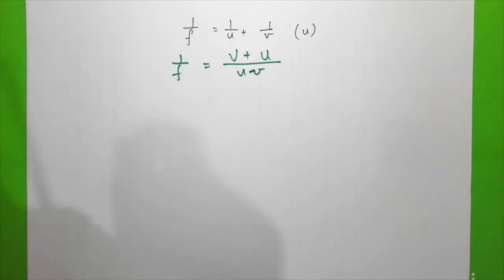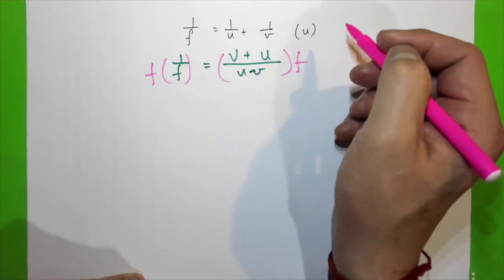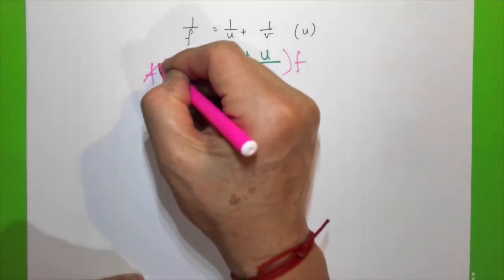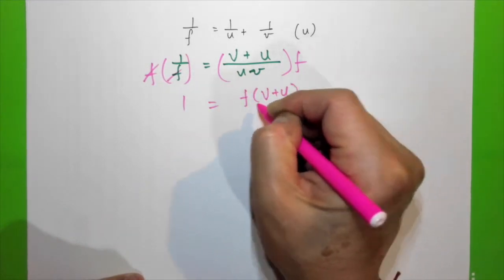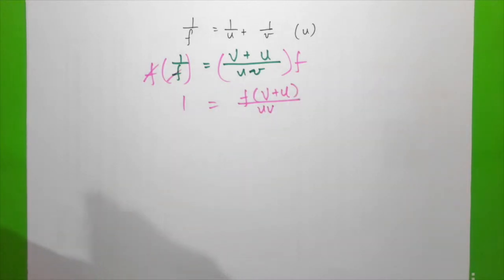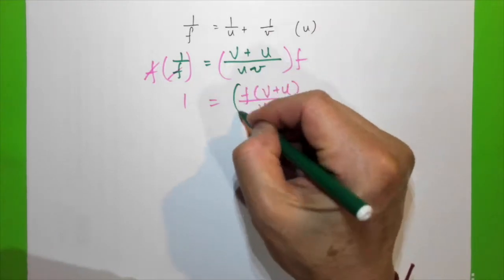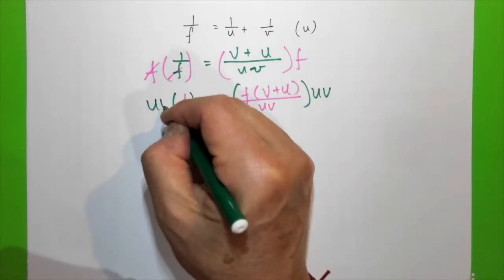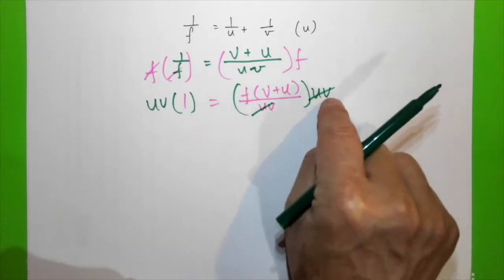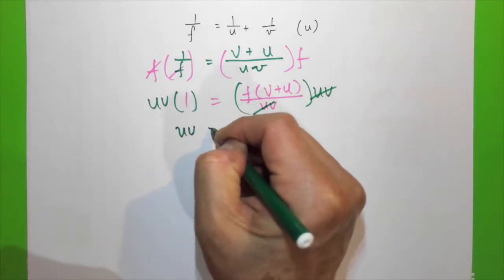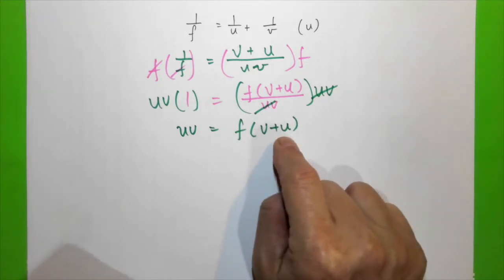I multiply both sides by f to eliminate f, giving 1 = f(v + u) over uv. The next step is to multiply both sides by uv to eliminate the denominator — there's no more uv, and rewriting: uv = f(v + u).